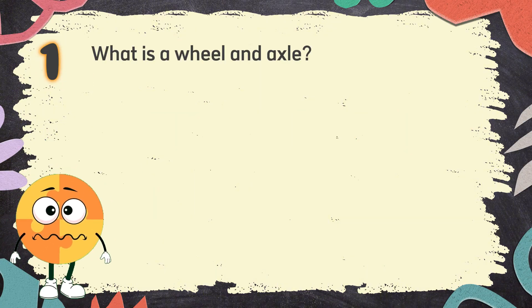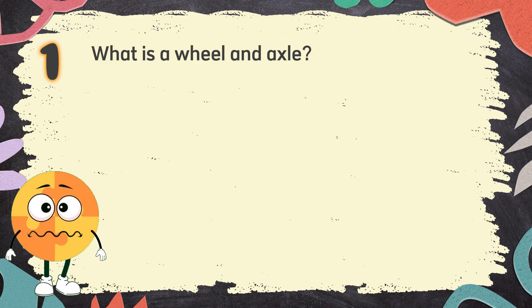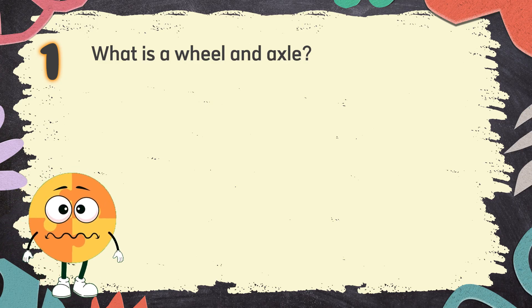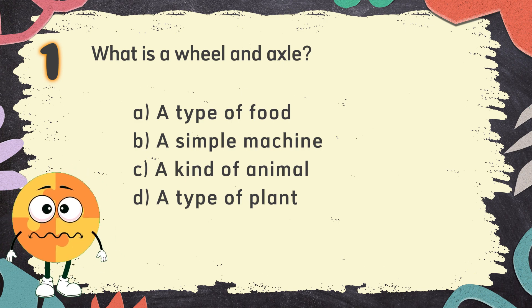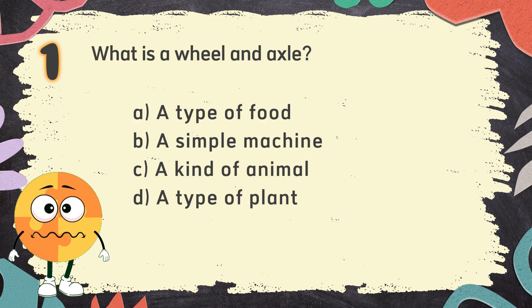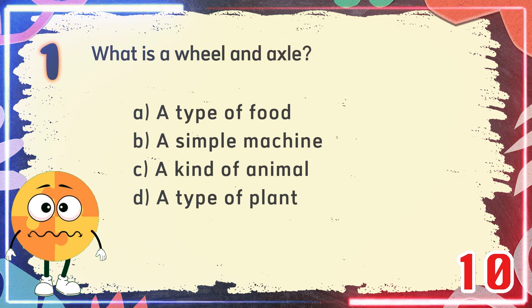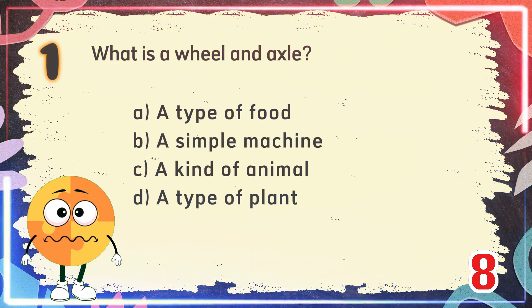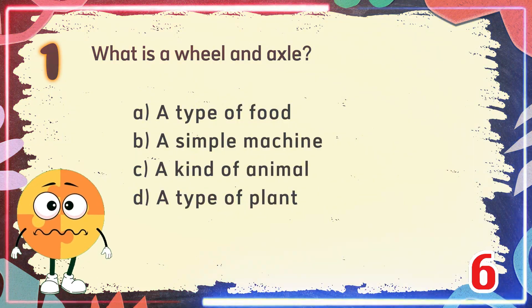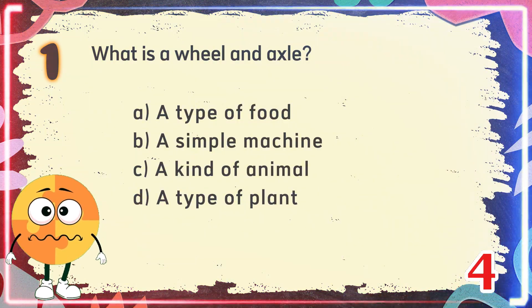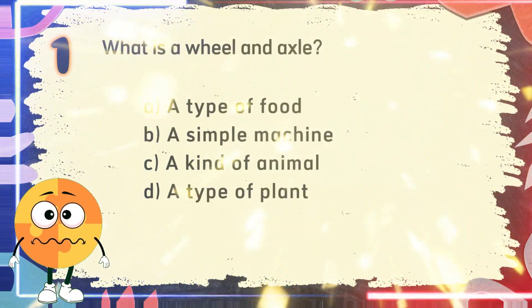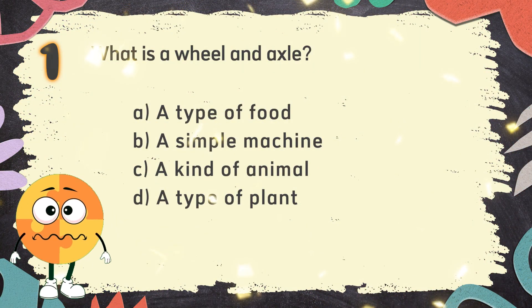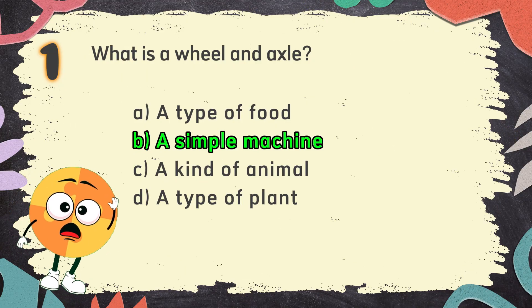Number 1. What is a wheel and axle? The choices are: A. A type of food. B. A simple machine. C. A kind of animal. D. A type of plant. The correct answer is B. A simple machine.